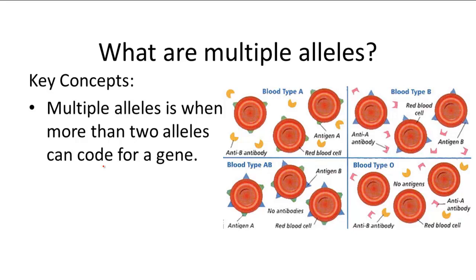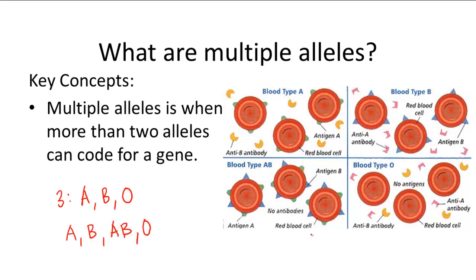Blood type has three alleles, as we already talked about: the A, B, and O alleles, and they recombine to form A, B, AB, and O blood types. So hence, there are multiple alleles because there are three alleles.